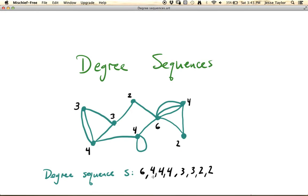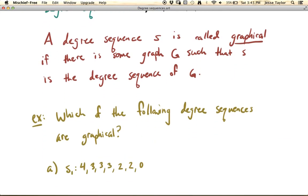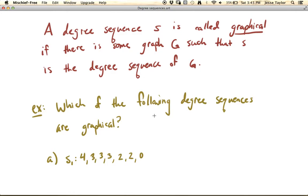That's what a degree sequence is, and in general it's not very hard to find. If you have a picture of a graph, you can just see what all the degrees are and write the degree sequence down. So that's not really what makes them interesting. What's interesting is to consider what degree sequences are graphical. So a degree sequence S is called graphical if there's some graph such that S is that graph's degree sequence.